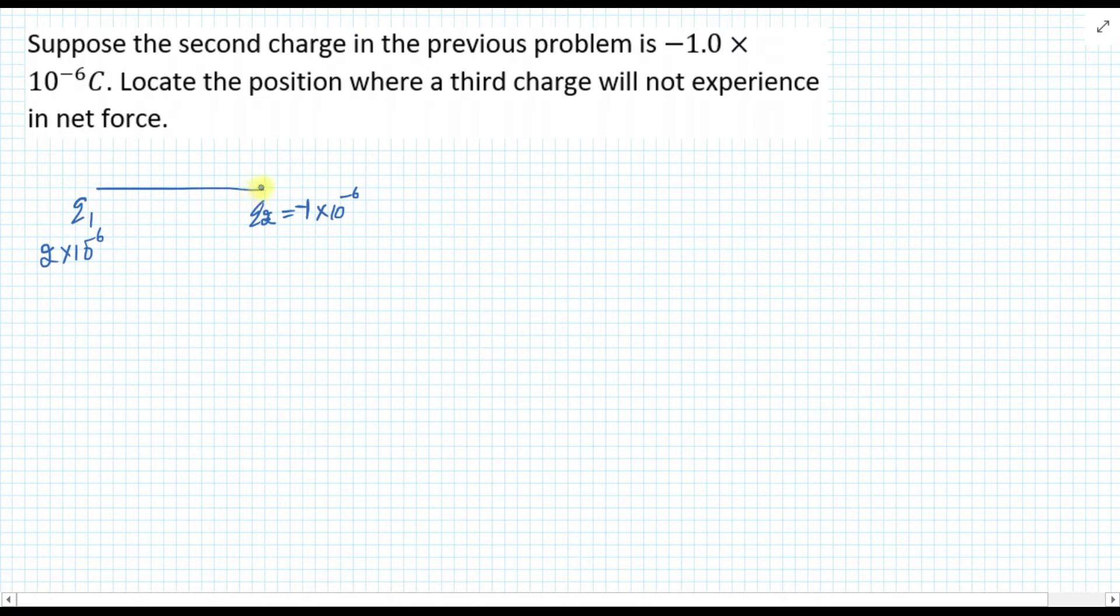So now we have to find out where we have the third charge so that the net force will be zero. If we keep it here, then what happens is that the Q2 charge will attract it and Q1 charge will repel it. So between Q1 and Q2, there will always be a force on Q3 in the direction of Q2. Let's say Q2 is going to be in the right side of Q3. Now Q2 is going to attract it and Q1 is going to repel it. So this is a position in the right side of Q3.